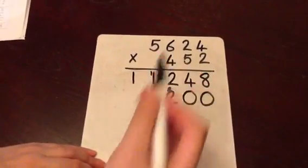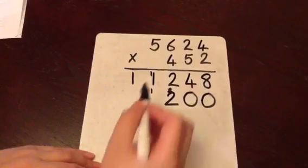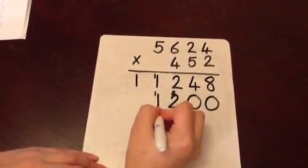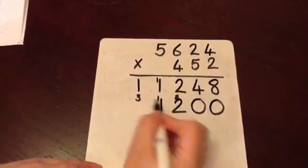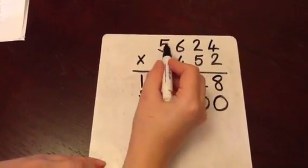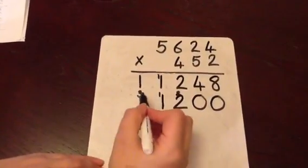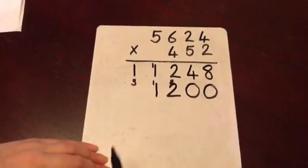5 multiplied by 6 is 30 and the 1 is 31 carrying those 3 across. 5 multiplied by 5 is 25 and the 3 is 28.